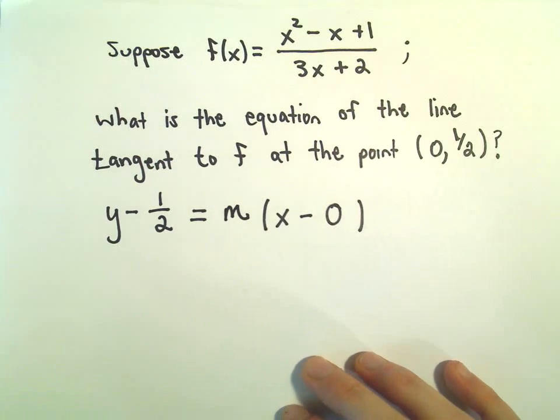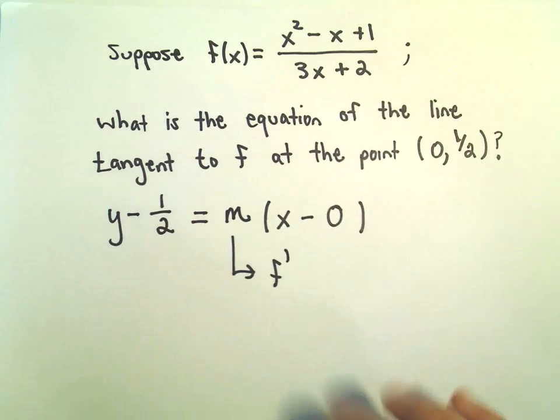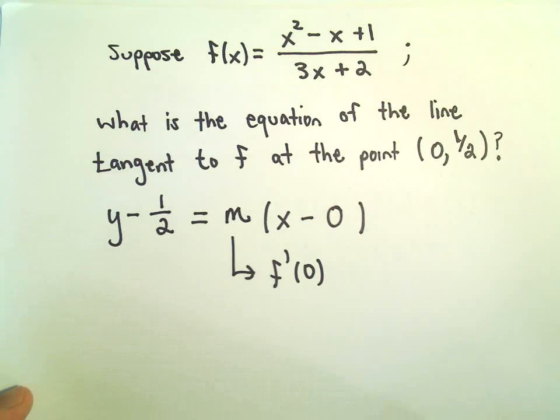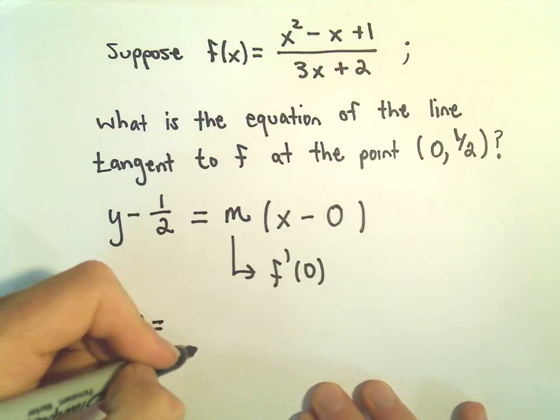Again, the slope is what we have to figure out. But the slope comes from the derivative. In this case, we'll have to plug 0 into the derivative to get the slope of our tangent line. To take the derivative of this function, we can just use the quotient rule.